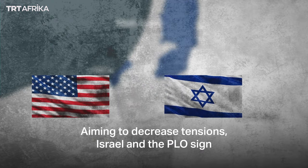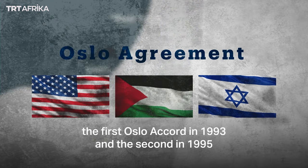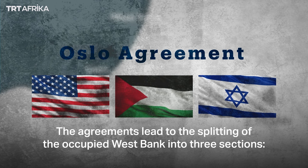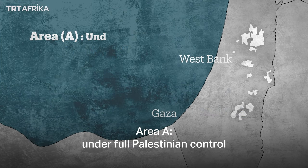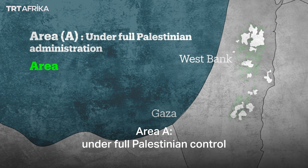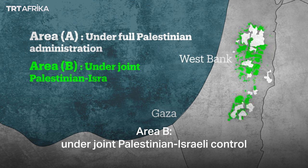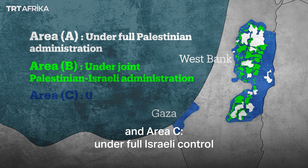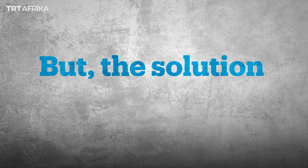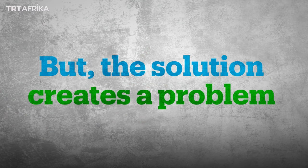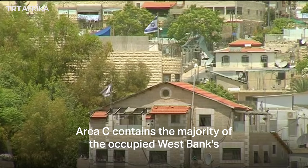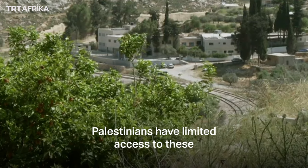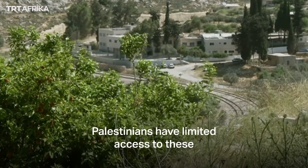Aiming to decrease tensions, Israel and the PLO signed the first Oslo Accords in 1993 and the second in 1995. The agreements led to the splitting of the occupied West Bank into three sections: Area A under full Palestinian control, Area B under joint Palestinian-Israeli control, and Area C under full Israeli control. However, Area C contains the majority of the West Bank's agricultural land, water, and minerals — resources to which Palestinians have limited access.